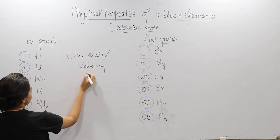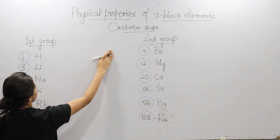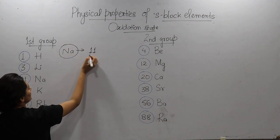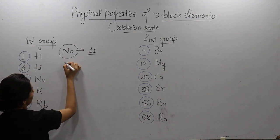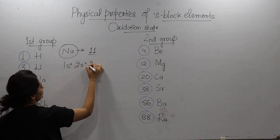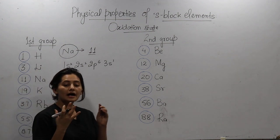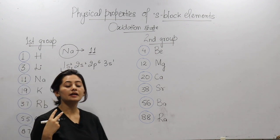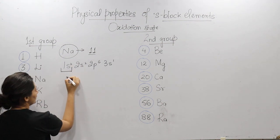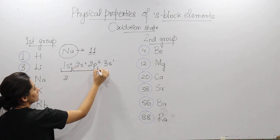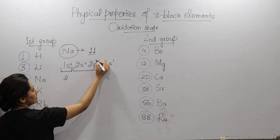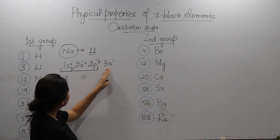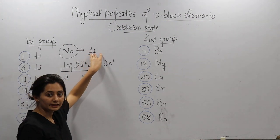For example, let's take sodium with atomic number 11. If we do the electronic configuration of sodium, it will be 1s2, 2s2, 2p6, and 3s1. What do we see here? The first shell — how many electrons can it accommodate? 2. So it already has 2 electrons. The second shell has 8 electrons total: 6 in the p-subshell and 2 in the s-subshell. So here there are 8 electrons. Total so far: 10. But the total number of electrons is 11, so we have 1 electron in the last shell.